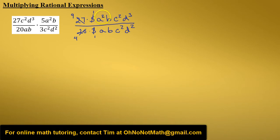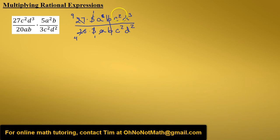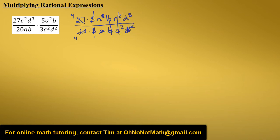Now let's take the variables. A squared divided by a is just a, so this a and its exponent simplify. Then b divided by b — the b's cancel. C squared divided by c squared — those cancel. And d cubed divided by d squared is just d.